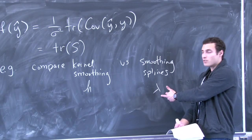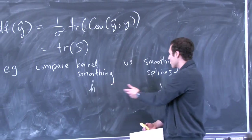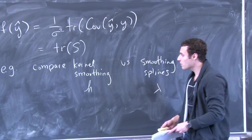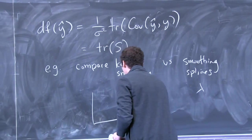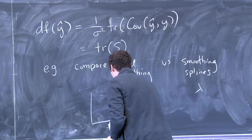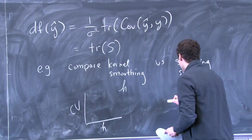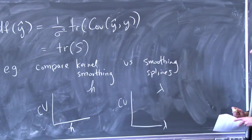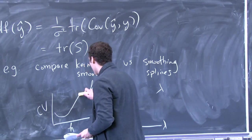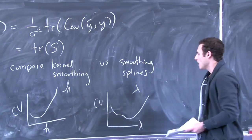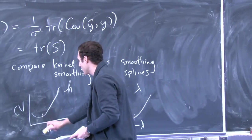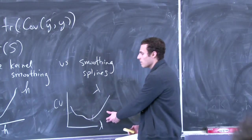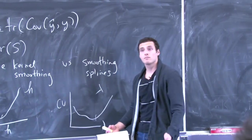If I compare kernel smoothing at h equals 1 versus smoothing splines at lambda equals 1, we don't know if that's a meaningful comparison. I could produce two error curves — the CV error for kernel smoothing versus h, and the CV error for smoothing splines versus lambda. Maybe the best lambda looks like lambda equals 10, and the best bandwidth looks like h equals 1.5. But we still don't know whether lambda equals 10 and h equals 1.5 are comparable, because they're on different scales.